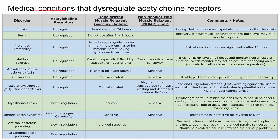This is a list of medical conditions that dysregulate acetylcholine receptors, and because of this dysregulation, it requires some extra thought on how you use muscle relaxants — whether that be depolarizing muscle relaxants like succinylcholine or non-depolarizing muscle relaxants, the drugs that end in 'ium' like rocuronium or cisatracurium.